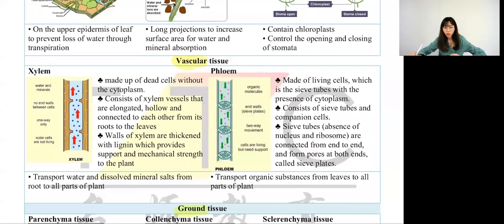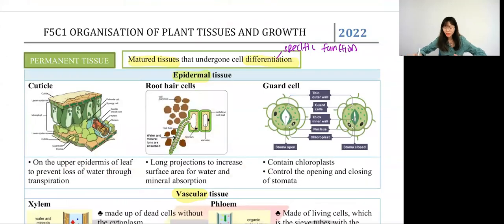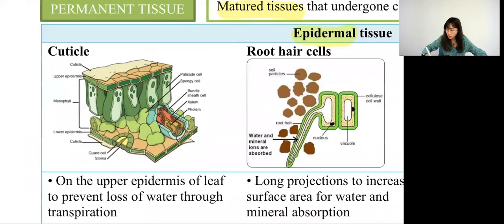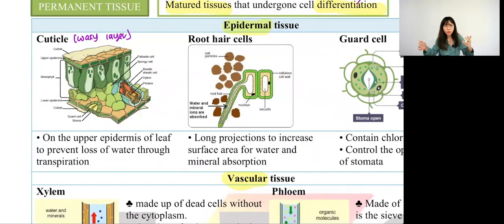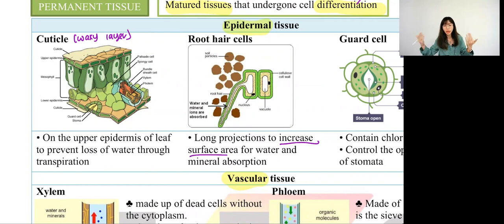Permanent tissue undergoes cell differentiation in order to have a specific function. We have three different tissue types in total: epidermal tissue, vascular tissue, and ground tissue. Let's start from epidermal — it is the outermost layer. We start from cuticle. Cuticle is the waxy layer found on the upper epidermis of a plant. The purpose of this waxy layer is to prevent excess water loss because the plant is always exposed to the sun. Root hair cells — not only one but many many — increase surface area to absorb more water and minerals.